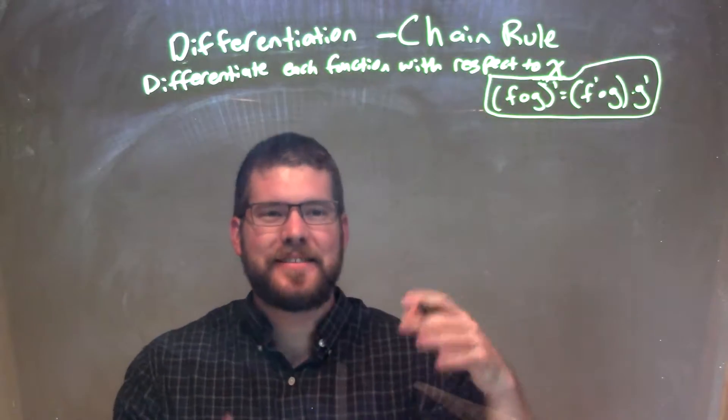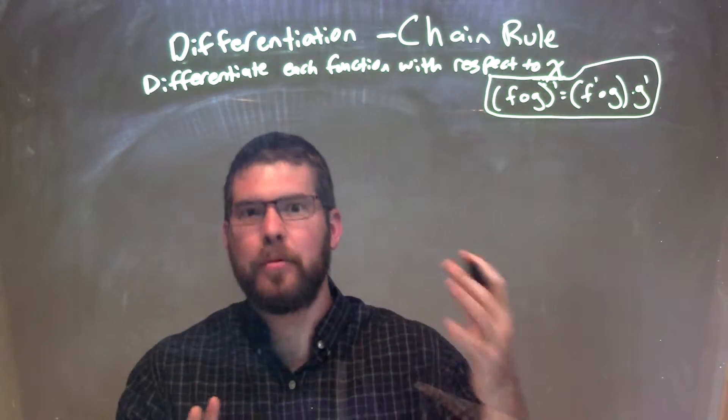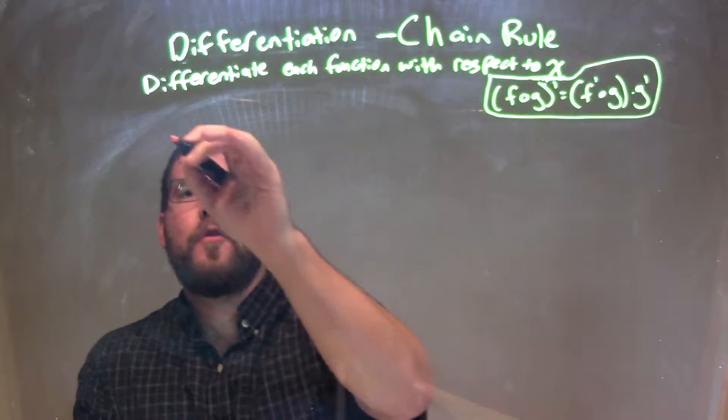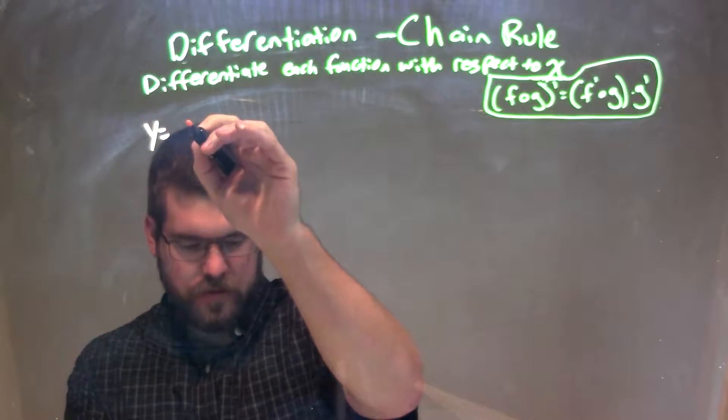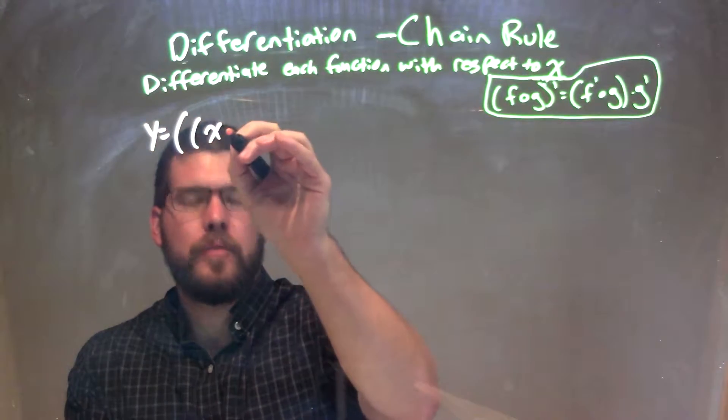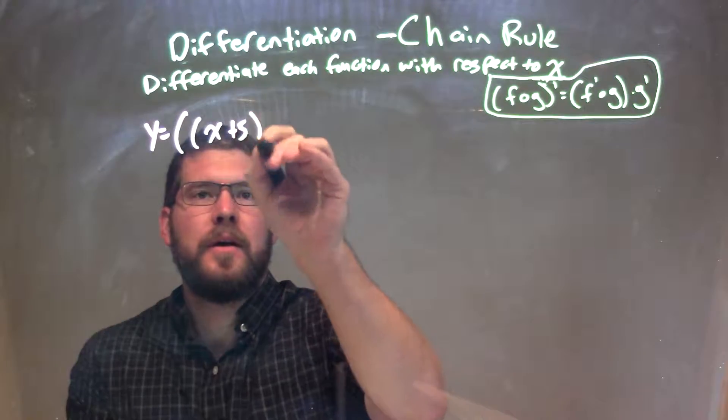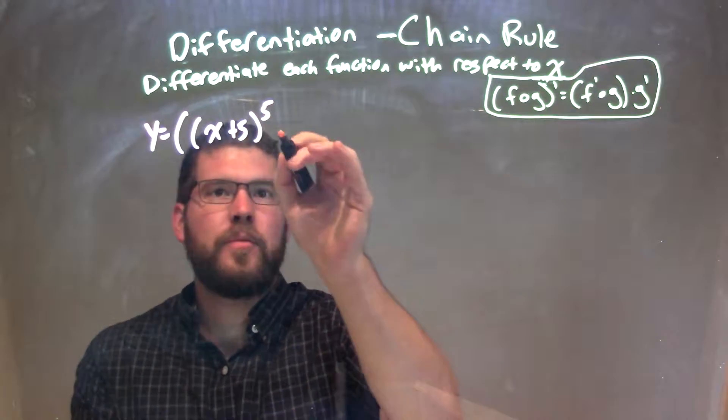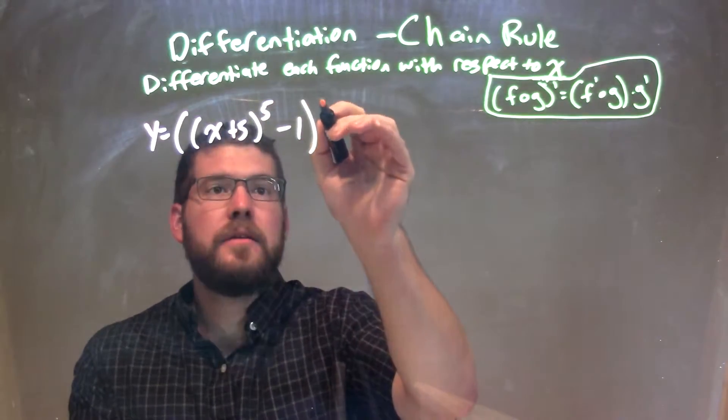We're going to differentiate each function with respect to x. Now this is like a double chain rule going on here. So my function here is y equals two parentheses, x plus 5, to the 5th power, minus 1, all of that to the 4th power.